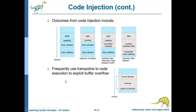Code injection frequently uses a trampoline to execute code — code that is briefly used only to redirect execution to another location, bouncing code flow from one spot to another.